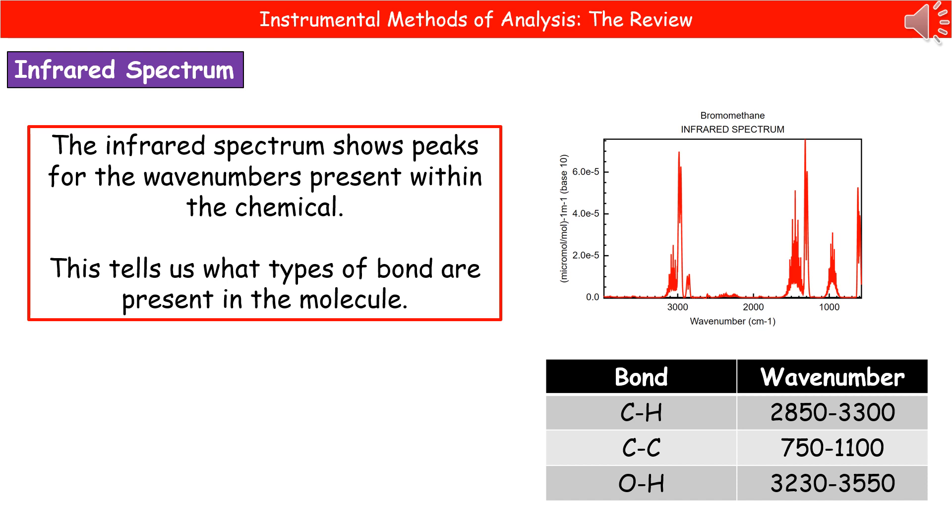When you pair that up with the results of a mass spec, you actually know your relative formula mass. So you know the total mass of all of the atoms that make it up. And then you can apply those two things together to actually work out the structure of the chemical, even if you don't have a clue what it is.